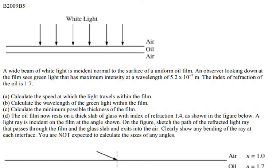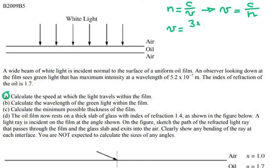For part A, the index of refraction is given for oil, and that equals the speed of light divided by the speed in the medium. So the speed of light in the medium equals the speed of light divided by the index of refraction. The velocity in oil equals 3×10⁸ divided by 1.7, which gives 1.675×10⁸ meters per second.